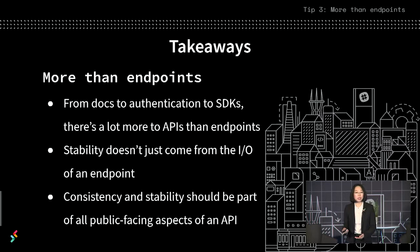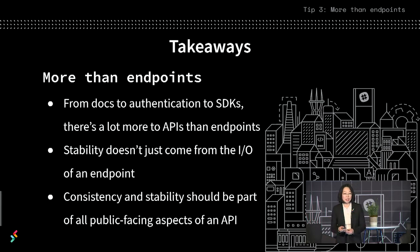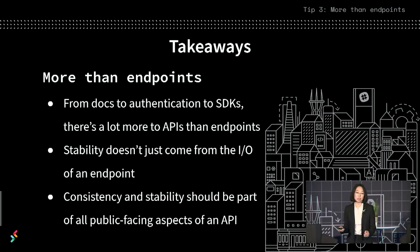An API is more than its endpoints. From docs and authentication to SDKs, there's so much that goes into making, exchanging, and sending and receiving data on the internet. Stability doesn't just come from the ins and outs of an API — it comes from everything around that API that supports developers. Consistency and stability should be a part of all public-facing aspects of an API, including the access patterns that developers are already using.